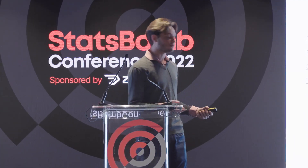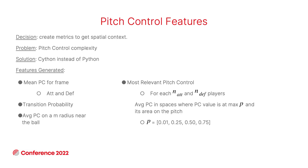The features generated are: the average pitch control for both attacking and defending teams, the transition probability, the average pitch control in the radius near the ball, and the most relevant pitch control. For the last feature, we rank players to get the most relevant pitch control players for each team, select N players for both, then input the average pitch control in spaces where its value exceeds a certain threshold, and the area on the pitch in those spaces.